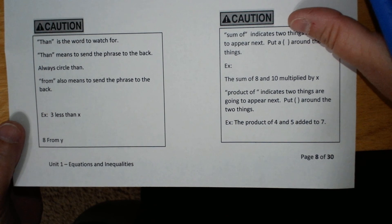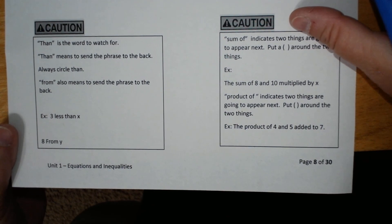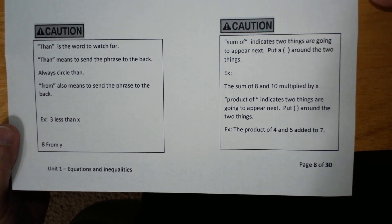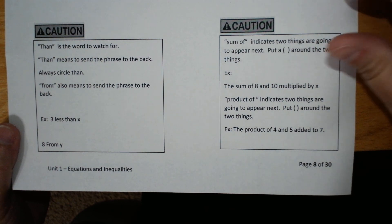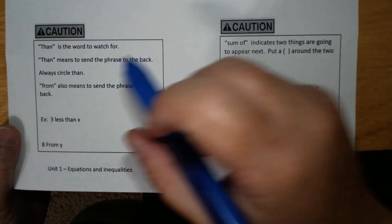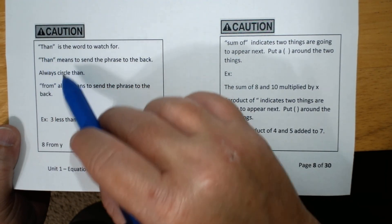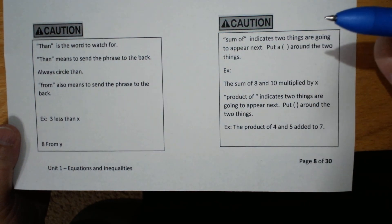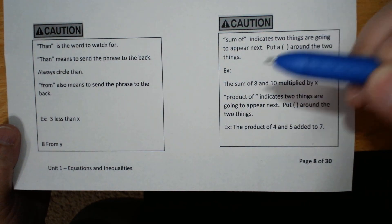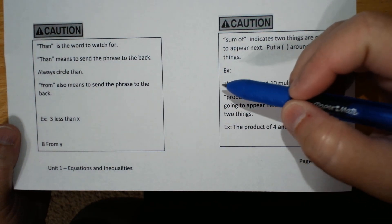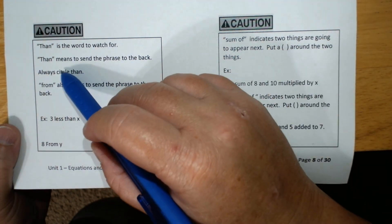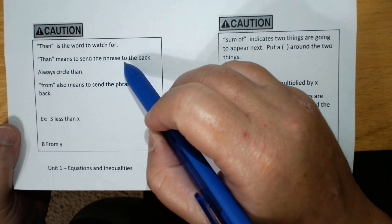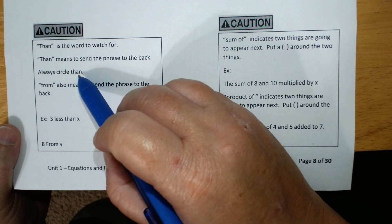Okay, words of caution. I'm going to fight you the entire time. This is going to cause you the most issues the entire unit when you are translating. It's the word then, it's the word to watch out for. I am going to have you circle the word then. And then it means to send the phrase to the back. Always circle it.